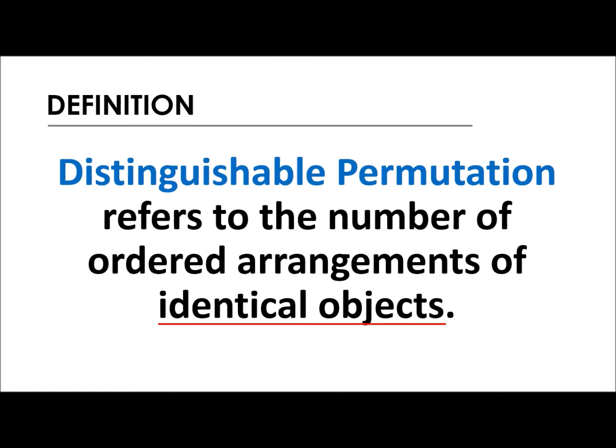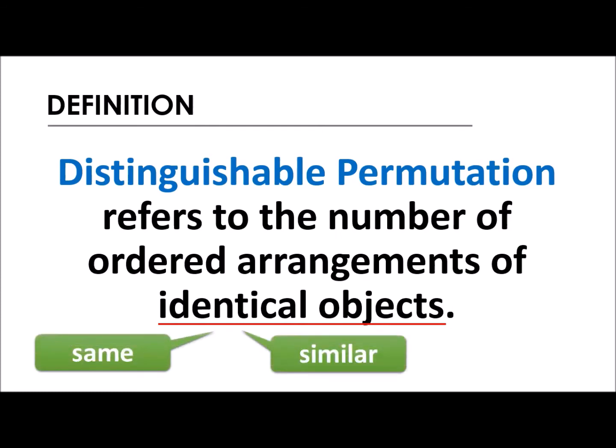Pag sinabing identical, parang identical twins — pagka nakita mo sila, hindi mo malaman, hindi mo ma-distinguish kung ano yung pinagkaiba ng bawat isa. Another way around: identical, same, or similar. So pagka-distinguishable, basan nakita niyo yung mga keywords na yan, we are pertaining to distinguishable permutation.